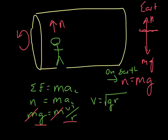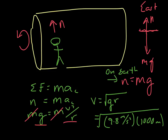Plugging in the numbers: g equals 9.8 meters per second squared, r equals 1,000 meters. Taking the square root, you get v equals about 99 meters per second.